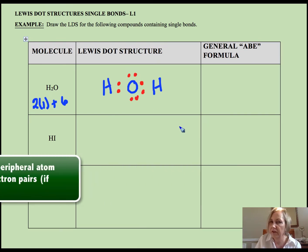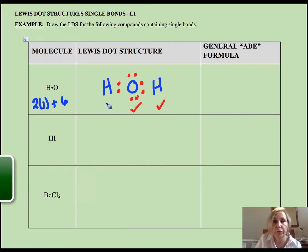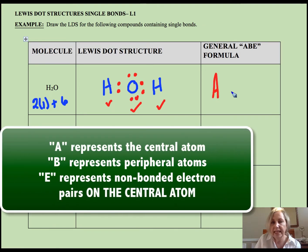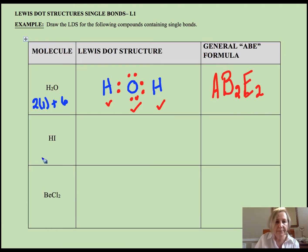So step one, make your bonds. Step two, satisfy your central. Step three, satisfy peripherals. Now central has a hydrogen, only wants two, you have to memorize that, so that is done. We're going to use A to represent that central oxygen. There are two peripheral atoms and there are two non-bonded pairs, so its generalized structure is AB2E2 and ultimately you're going to realize that's how you memorize these.